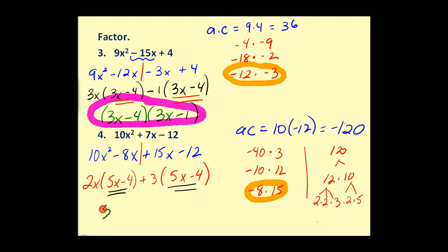By factoring out the 5x - 4, we'd be left with 2x + 3. So these problems are quite a bit of work, but they are manageable if you take it step by step.